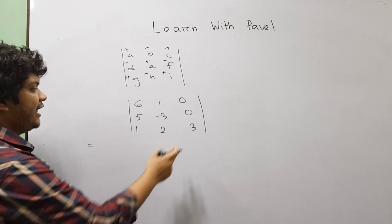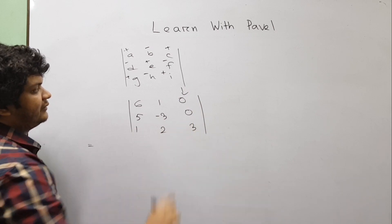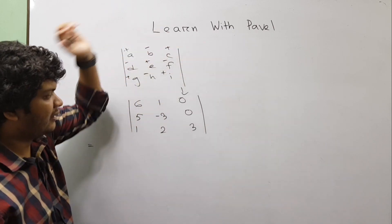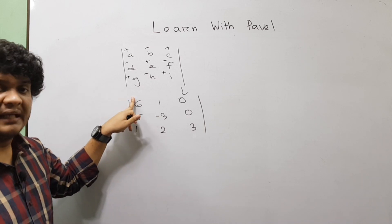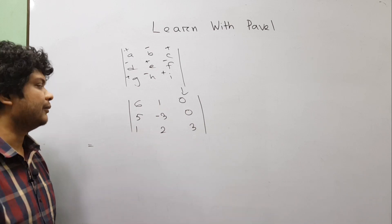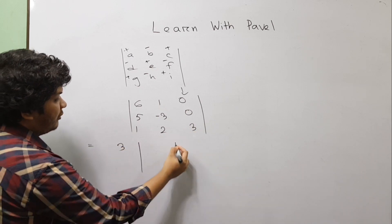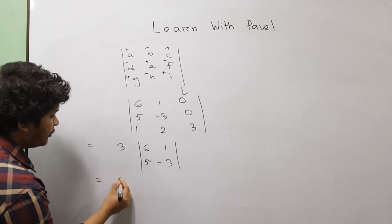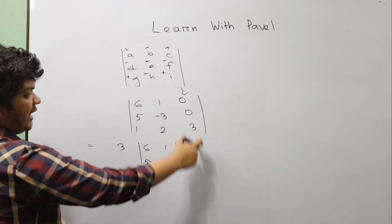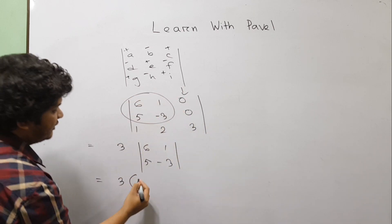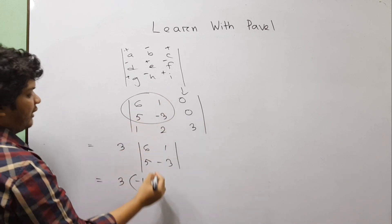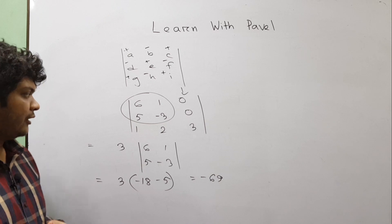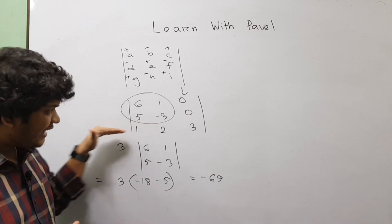Expanding along the third column since it has zeros: the sign pattern is plus, minus, plus. This gives 3 times the 2x2 determinant of [6,1; 5,3], which is 3*(6*3 - 1*5) = 3*(18-5) = 3*13 = 39. Then minus 5 times another minor, plus 3 into 23, giving minus 69.